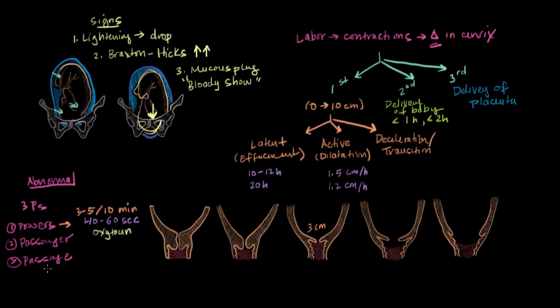And then finally, there's the last P, or passage, which refers to mom's bony pelvis and the soft tissues of the birth canal. So the cervix and the pelvic floor muscles. Abnormal labor could be the result of something we call cephalopelvic disproportion. Cephalo means head, pelvic refers to pelvis. We're talking about a disproportion between the baby's head and the mom's pelvis. Basically, the baby's head can't fit through mom's pelvis, either because baby's too big or mom's pelvis is too small. In either case, since you really can't change either variable, c-section tends to be the only treatment for this problem.